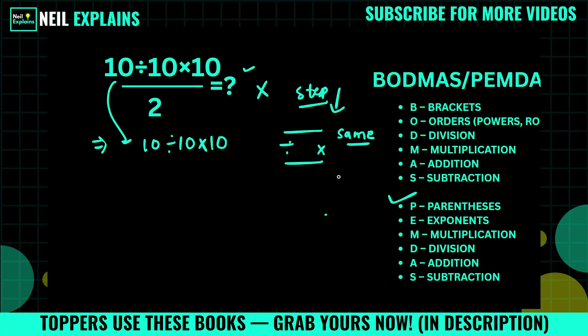And in that case we will solve from left to right. So in this case, 10 divided by 10 which will become 1 into 10, that is equal to 10. So this is for the numerator.